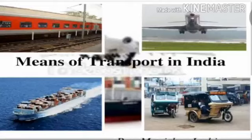The Golden Quadrilateral project was started to create more highways. This is the project that connects the four metropolitan cities: Delhi, Mumbai, Kolkata, and Chennai.